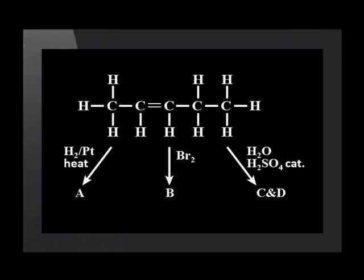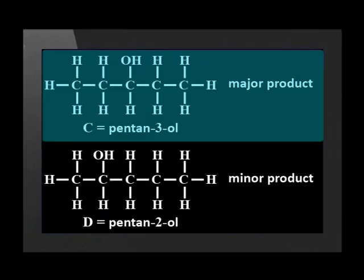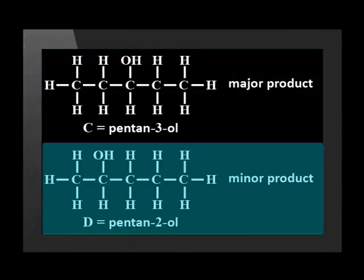If water is added in the presence of sulfuric acid, molecules C and D are formed. C is the major product, pentan-3-ol, while molecule D is the minor product, pentan-2-ol.